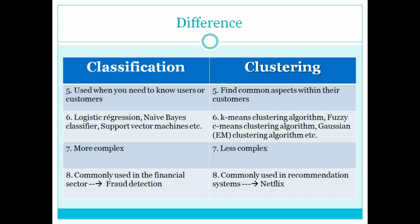Examples of classification algorithms include logistic regression, Naive Bayes classifier, and Support Vector Machine. Examples of clustering algorithms include K-Means clustering, hierarchical clustering, fuzzy K-Means clustering, and Gaussian clustering algorithm.